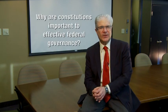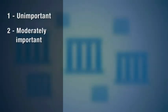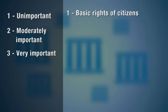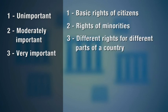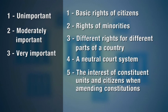Our module question has been: why are constitutions important to effective federal governance? To help answer the question, think about each of the following constitutional elements and ask yourself how important they are to the effective governance of your country. Use the scale of one (unimportant), two (moderately important), and three (very important) to grade the importance of each element: one, basic rights of citizens; two, rights of minorities; three, different rights for different parts of a country; four, a neutral court system; five, the interests of constituent units and citizens when the constitution could be amended or changed.